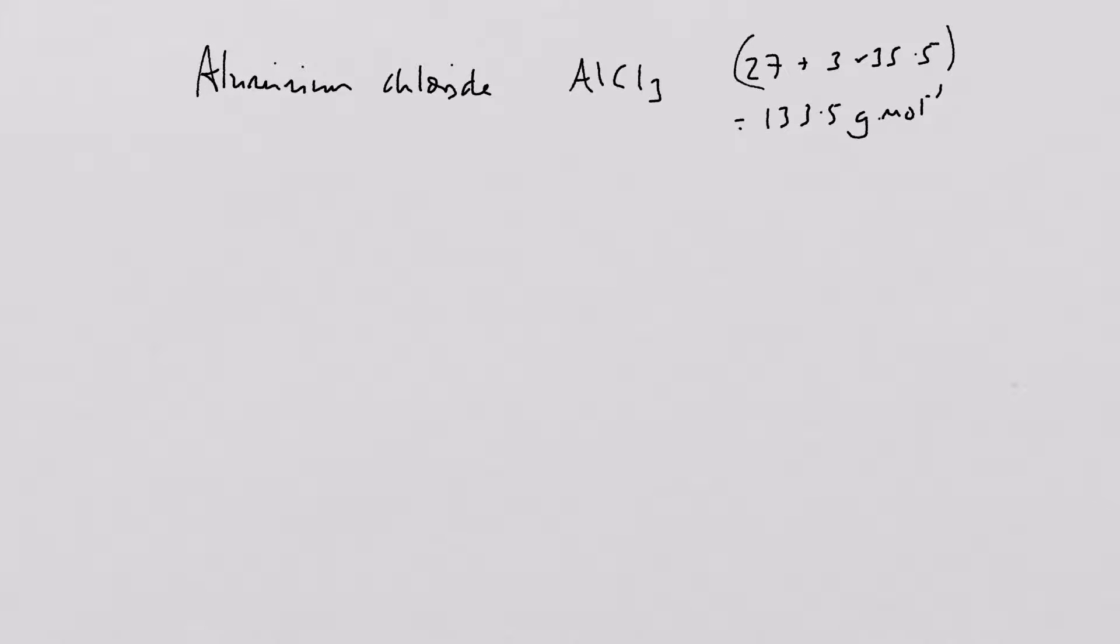OK, but oddly, when we do some analysis on aluminium chloride, we find the relative molecular mass of aluminium chloride is precisely 267 grams per mole. So this one here is actually wrong. You'll notice that's double that. And therefore, we garner the fact that aluminium chloride is actually Al2Cl6. And we need to work out why that's the case.